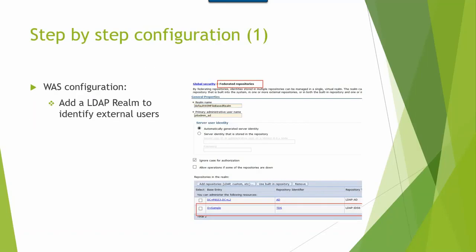Now let's go to the step-by-step configuration. The first thing you need to complete is changing the WAS LDAP settings to federated repositories, then add another LDAP realm to identify the external users.